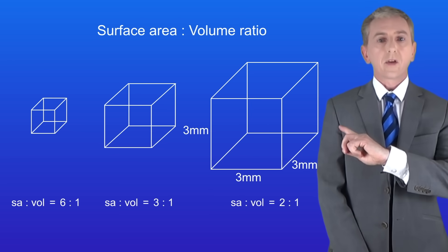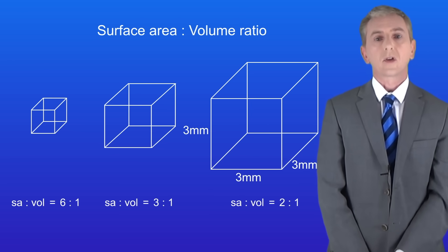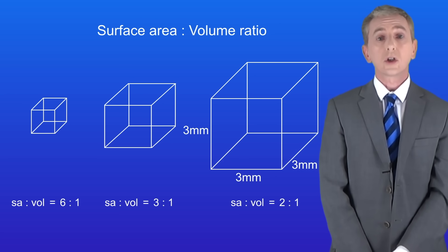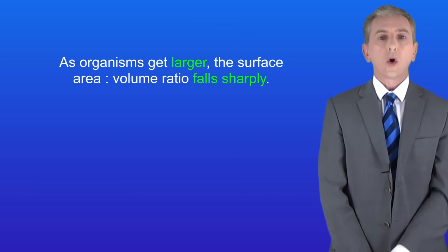Here's another organism and this one's got sides of three millimetres. For this organism the surface area to volume ratio falls to two to one. So as you can see, as organisms get larger the surface area to volume ratio falls sharply.